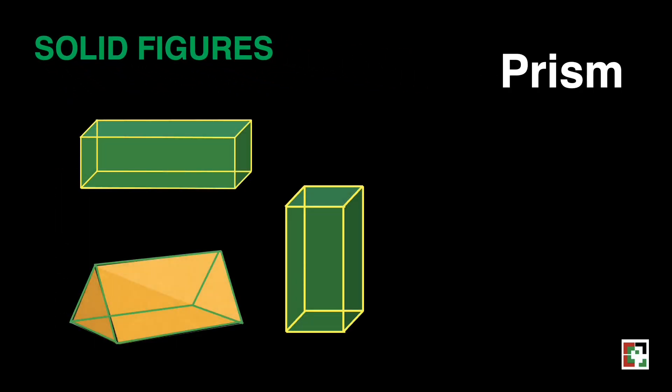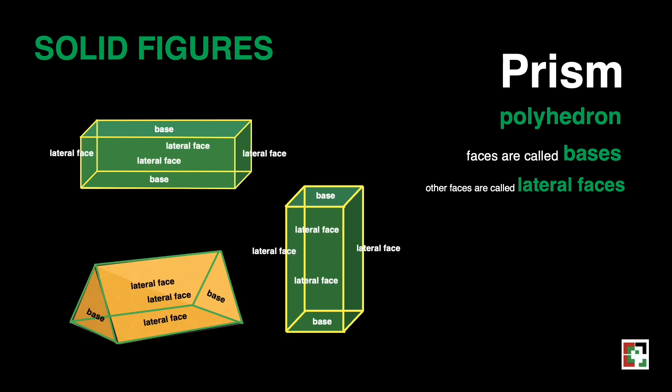A prism is a polyhedron with exactly two faces that are congruent and parallel. These faces are called bases. Other faces are called lateral faces. Some examples of prisms are rectangular prism, triangular prism, pentagonal prisms, hexagonal prisms, etc.